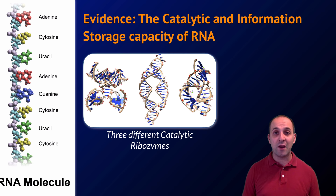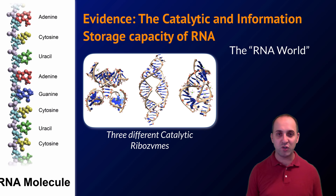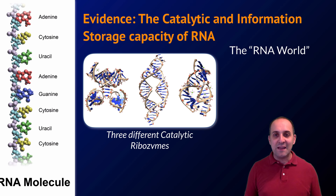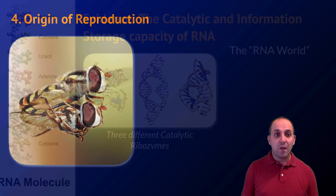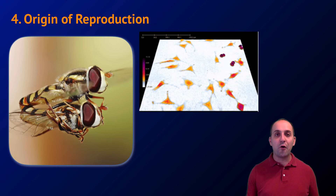RNA's ability to both store information and catalyze reactions suggests it may have been the first information storage molecule. These catalytic RNA molecules are called ribozymes, and they can carry out different kinds of chemical reactions. Some ribozymes are autocatalytic — they can copy themselves — and can be evolved in the lab to copy themselves faster and faster. This all ties into the concept of an 'RNA world,' a hypothetical time before DNA when early life used RNA for information storage.